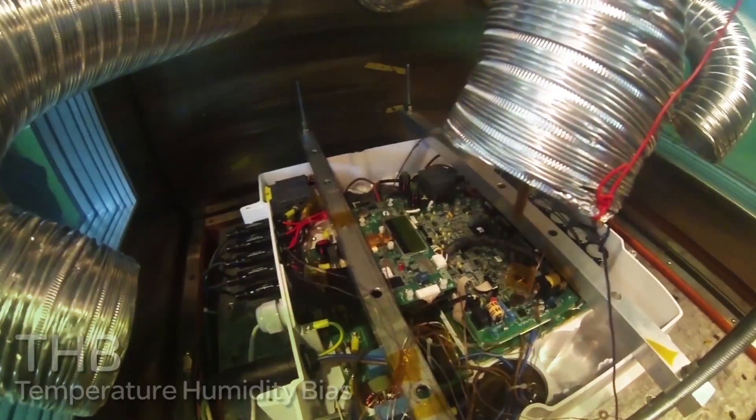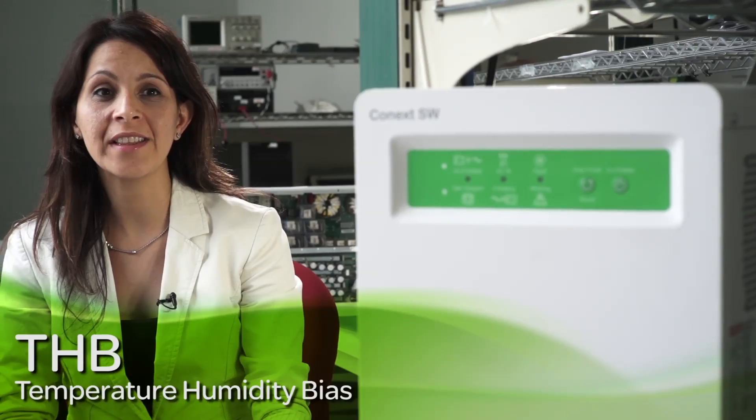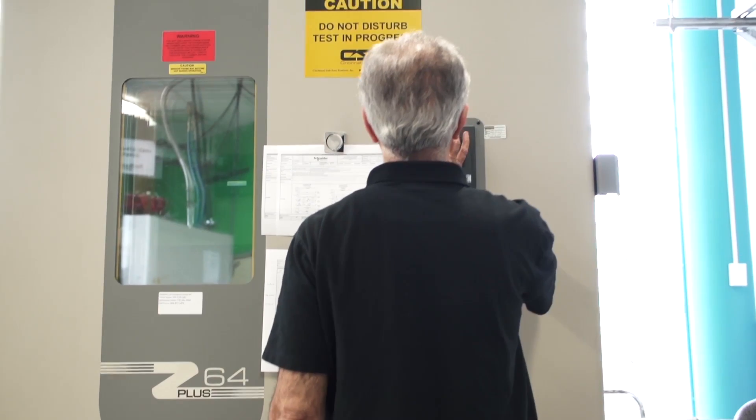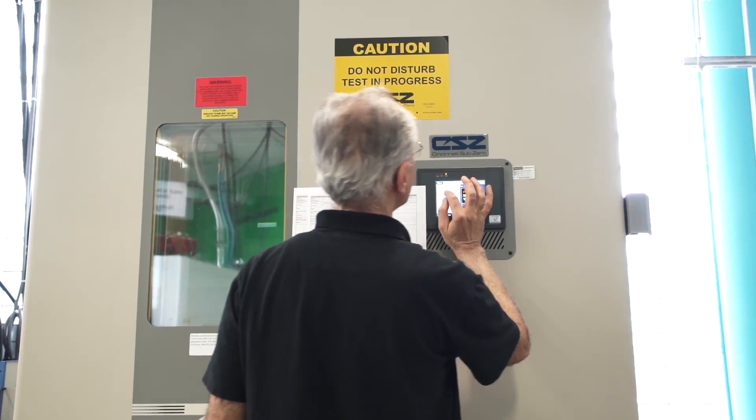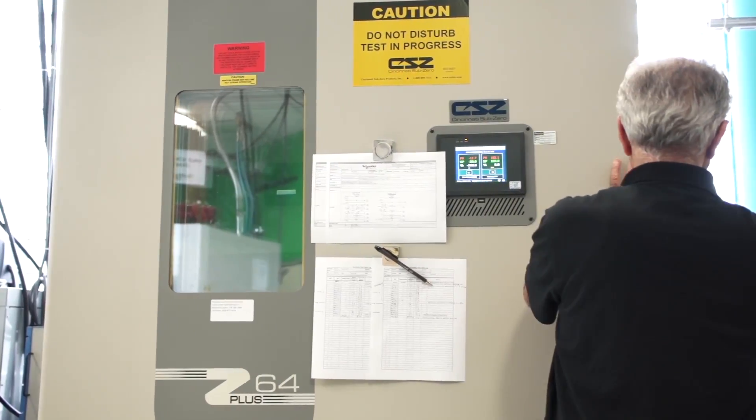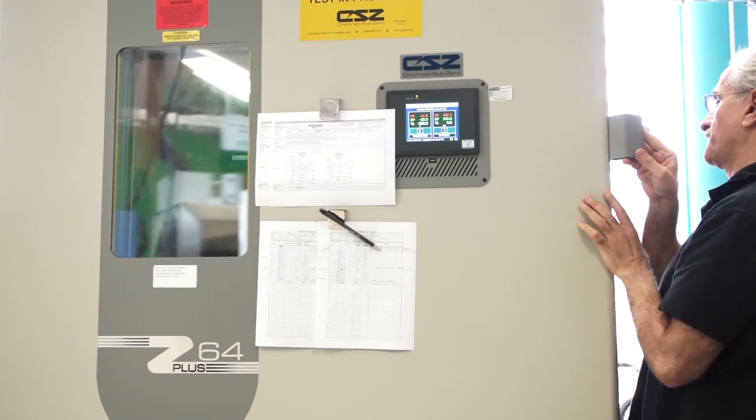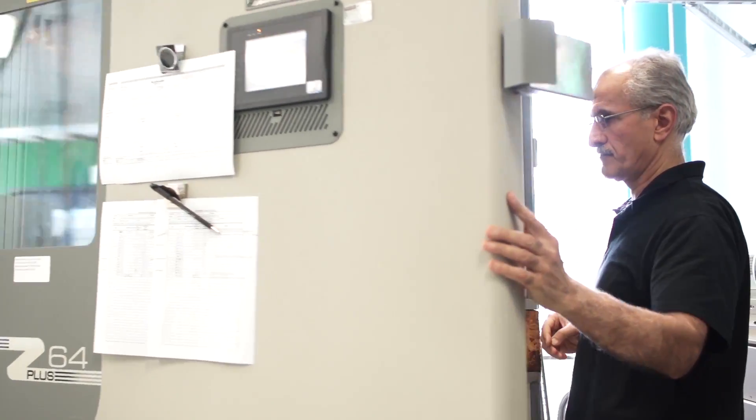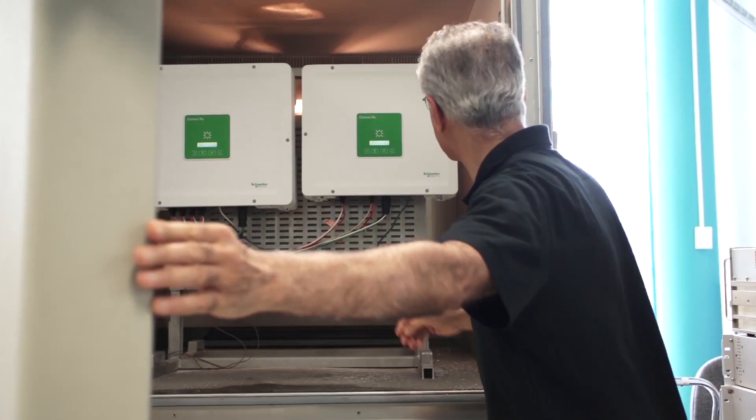Second, temperature and humidity bias testing, or THB. In this test, we accelerate the penetration of moisture inside the unit under test by keeping temperature and relative humidity at high levels for a long period of time. This is to understand how the product performs in hot and humid conditions and determine its robustness against humidity, electro-migration, rust, or corrosion.